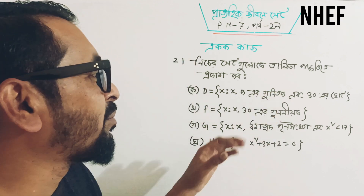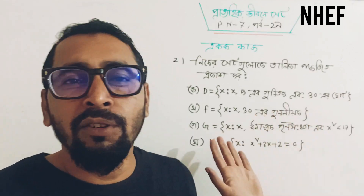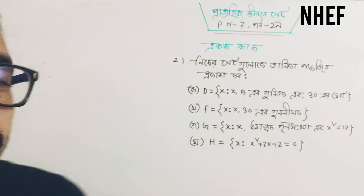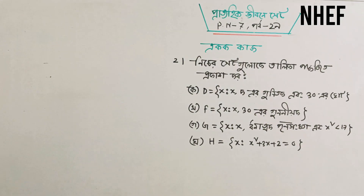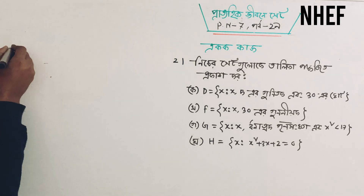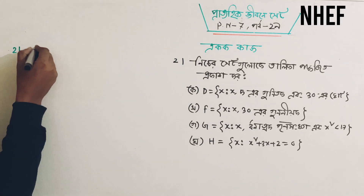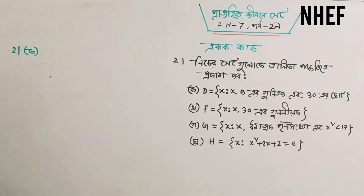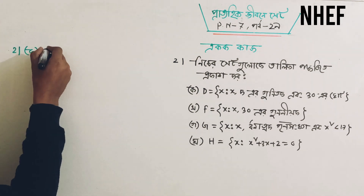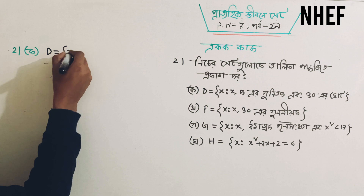This is the set-builder method that we have to do. We have to do the same method. I will go to the next question. Let's go to the question. Given that D is equal to x...